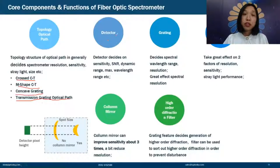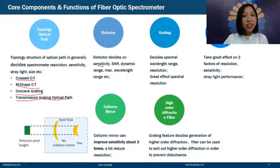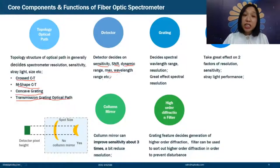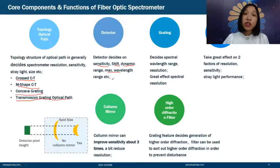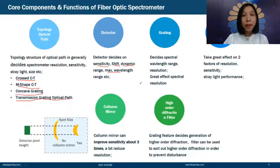Second, we must consider the detector — the most important component affecting spectrometer performance. The detector decides sensitivity, signal-to-noise ratio, dynamic range, and maximum wavelength range. The detector also makes up the main cost of the spectrometer. A cooled detector can cost thousands, while an uncooled one may cost a few hundred dollars.